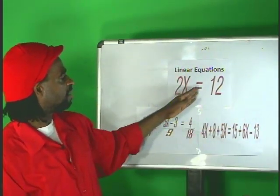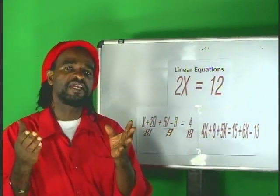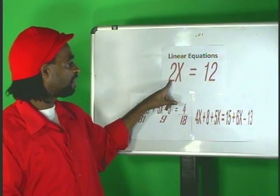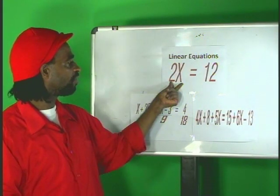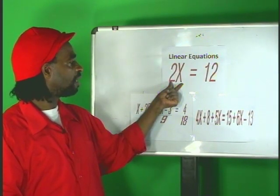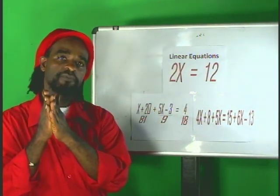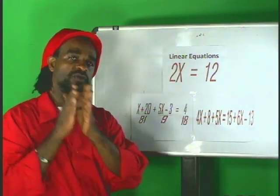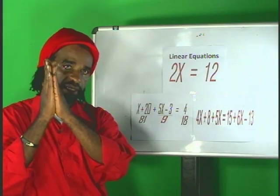If 2x is equal to 12 and we have to solve for x, it means we have to find a value for x. How do we do that? We should think about getting rid of this 2 over here. But if you get rid of 2 over here, you'll have to do a similar thing over here. So, you divide this side by 2 and then you divide this side by 2. In doing that, x will be equal to 12 over 2, which is 6.